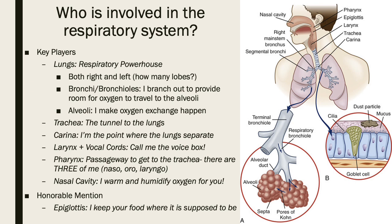Then we have the trachea — the windpipe, the tunnel down to your lungs. Right before branching into the lungs, we have the carina, which is that branching point from right to left. Once branching into the lungs, there are the bronchi, then smaller bronchioles, and then the alveoli — where oxygen exchange happens, those little grape-looking structures. Most diseases and disorders we discuss involve problems with those alveoli, and most problems are more lower airway than upper airway.